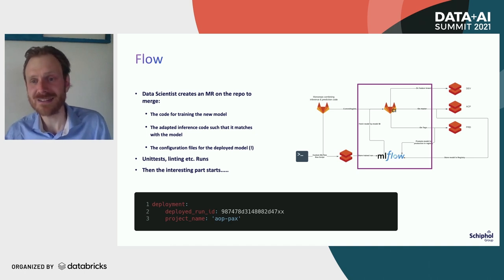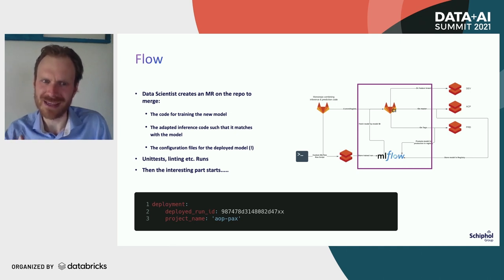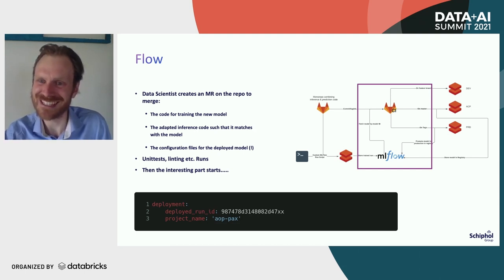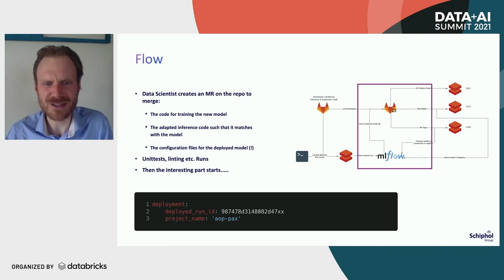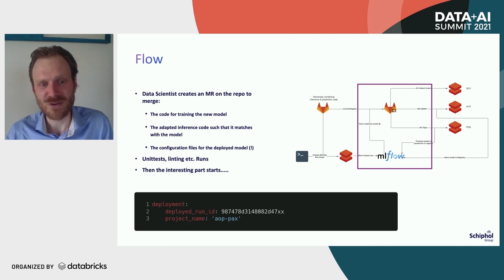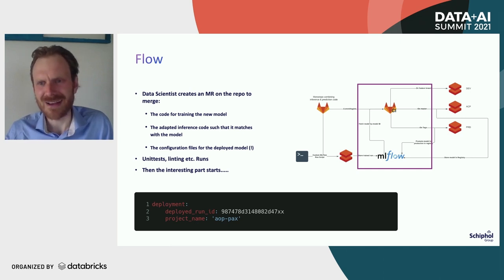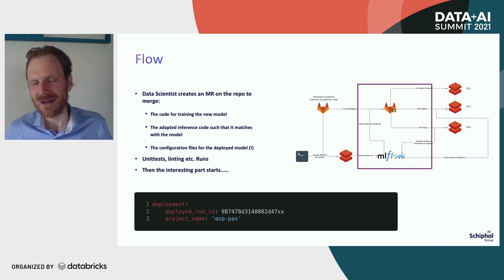This is also the reason why per project we have a sort of a mono repo — a repository where we store the code for training and the code for inference in the same repository. That allows us to have merge requests where if we want to merge something to master, we know that if the training code is updated, the inference code also needs to be updated with it, and we can review that in one go. This is really enabling for data scientists because now they can take a model to production basically themselves without having to ask an engineer to update something somewhere. The data scientist creates a merge request and updates the inference code in a similar way to how he updated his training code — he knows how he created those features and what needs to be changed on the inference side. He also updates a small configuration file that specifies a deployed run ID — a run ID of an MLflow run that is now referenced as the model to deploy in this flow.